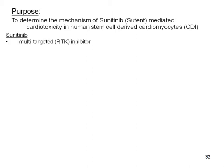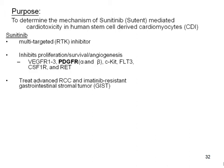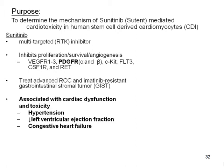Sunitinib is a multi-targeted receptor tyrosine kinase inhibitor, which inhibits both the proliferative survival and angiogenesis pathways, and is currently in the clinic to treat advanced renal cell carcinoma and imatinib-resistant gastrointestinal stromal tumors, but is associated with a considerable amount of cardiac adverse events such as hypertension, which leads to hypertrophy of the cardiomyocytes, as well as decreases in the left ventricular ejection fraction and congestive heart failure. In the clinic, they've also been able to detect prolongation of QT.